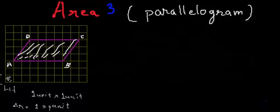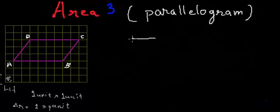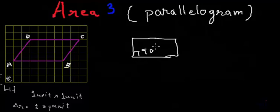In the last video we learnt how to find the area of a rectangle and a square. In a rectangle, all the angles are 90 degrees. But here we can see that this angle is more than 90 degrees and this angle is less than 90 degrees. So we definitely cannot use the formula of a rectangle, and we have to find something new to calculate the area of this parallelogram.